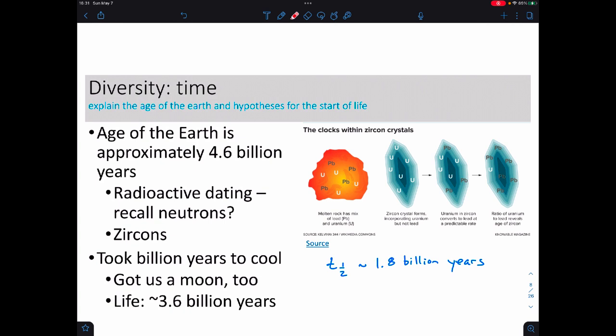The earth is about 4.6 billion years old. How do we know that? The way that we figured this out is through radioactive dating, and this is bringing us back to the start of the class when we dealt with neutrons and the fact that neutrons deal with the stability of an atom.